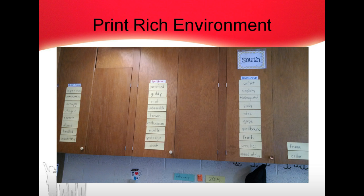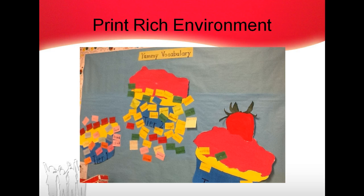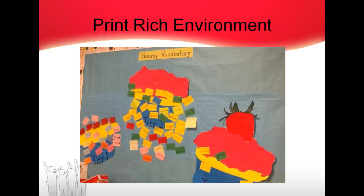Here's an example of a print-rich environment. These students started collecting tier two words on a bulletin board, ran out of room, and have now gone toward the cupboards — their goal is to cover all the cupboards and start on the door. Here is an example of a tiered word wall in a primary classroom focusing on tier two words. Tier three has that strawberry-on-the-cupcake idea — extra words used in a content area — while tier one words are simply high-frequency words that don't need to be focused on.